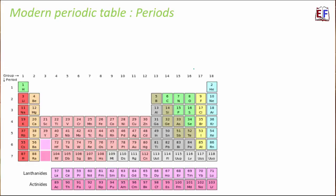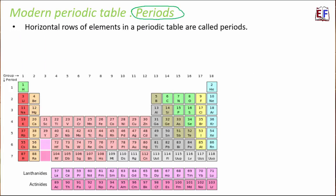Any horizontal row of elements in a periodic table is called a period. For example, the first period consists of two elements — hydrogen and helium. The second period has eight elements: lithium, beryllium, boron, carbon, nitrogen, oxygen, fluorine, and neon, and so on.